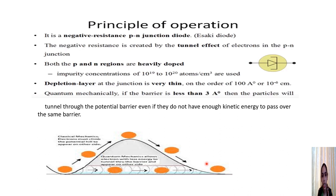For the operation of the Esaki diode, we consider quantum mechanics instead. According to quantum mechanics, if the barrier is less than 3 angstroms thick, particles can tunnel through the potential barrier even if they do not have enough kinetic energy to pass over it. So electrons can still tunnel through and reach the other side, provided the barrier thickness is less than 3 angstroms.